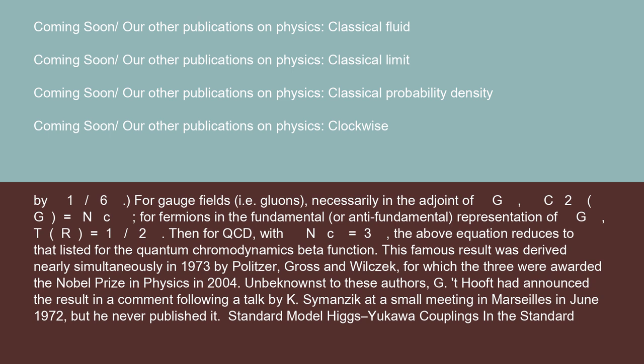This famous result was derived nearly simultaneously in 1973 by Politzer, Gross, and Wilczek, for which the three were awarded the Nobel Prize in Physics in 2004. Unbeknownst to these authors, G. 't Hooft had announced the result in a comment following a talk by K. Symanzik at a small meeting in Marseilles in June 1972, but he never published it.